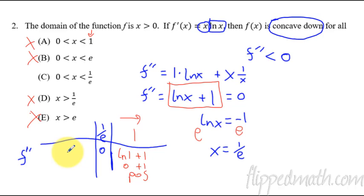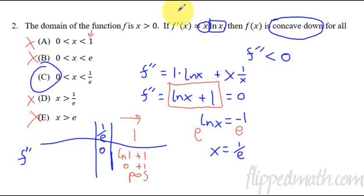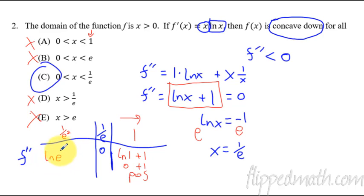To actually prove it, you'd plug in a number smaller than 1 over e, like 1 over e squared. The natural log of e to the negative two plus one is negative two plus one, which is negative one — so the second derivative is indeed negative there. That confirms the function is concave down on the interval from 0 to 1 over e. Process of elimination can help, but that's the full proof.